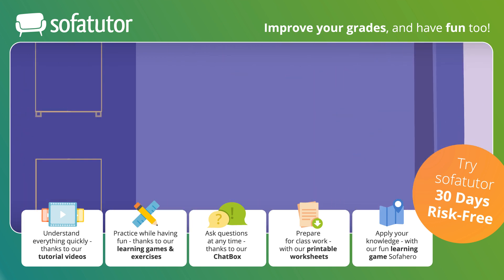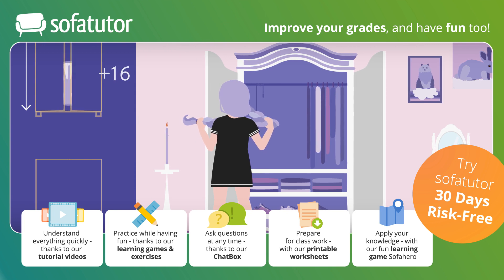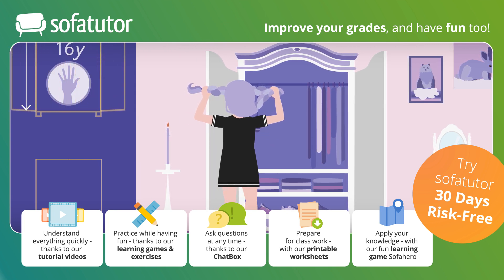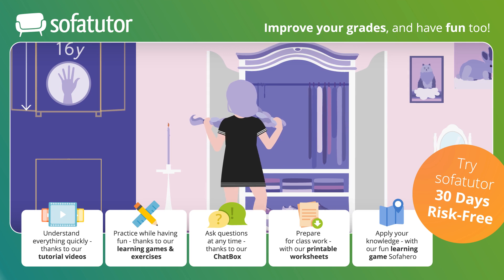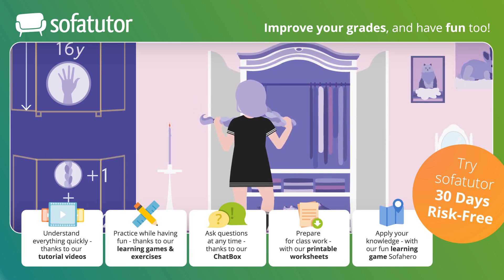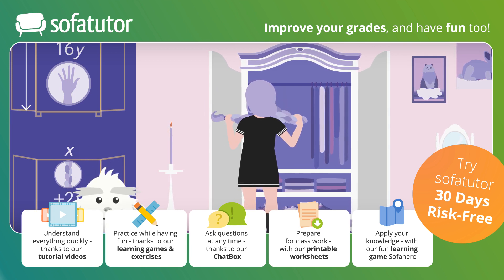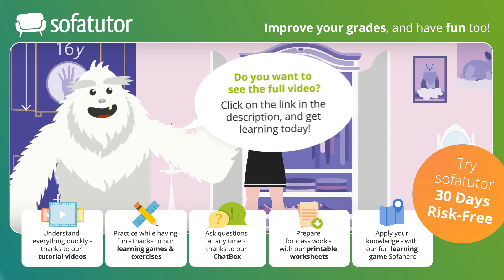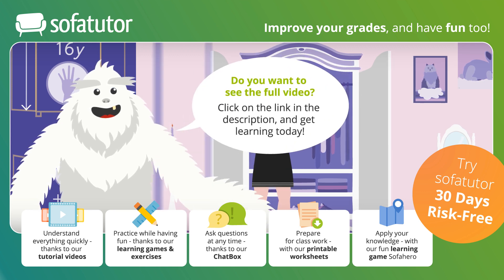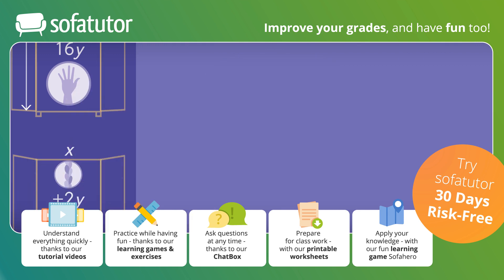Next, Rapunzel measures the closet. The length is 16 times the width of her hand, or 16y. The width is 1 times the length of her hair plus 2 times the width of her hand, giving us the binomial x plus 2y. Again, find the area by multiplying — but this time, you multiply a monomial by a binomial. Let's work this out.